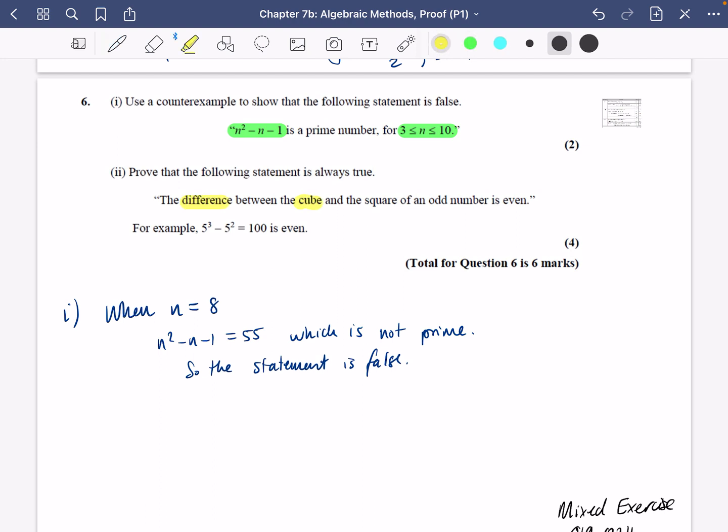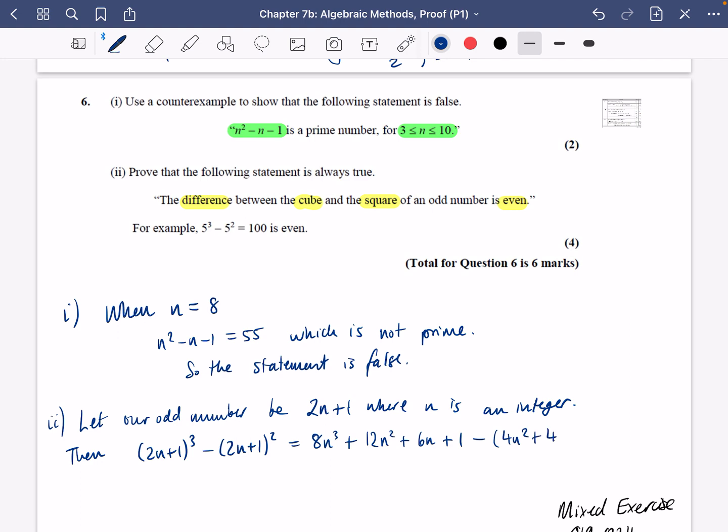The last part says prove that the following statement is always true. It says the difference between the cube and the square of an odd number is even. So let our odd number be 2n + 1, where n is an integer. Then the difference between the cube and the square we will work out. Using the binomial expansion, we have (2n + 1)³ - (2n + 1)², which is 8n³ + 12n² + 6n + 1 - (4n² + 4n + 1).